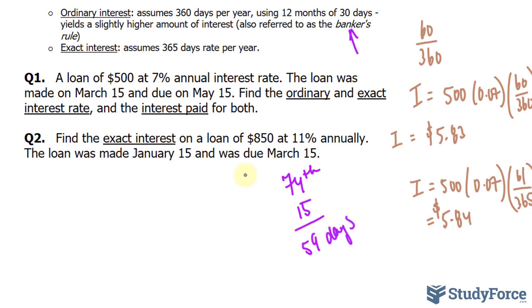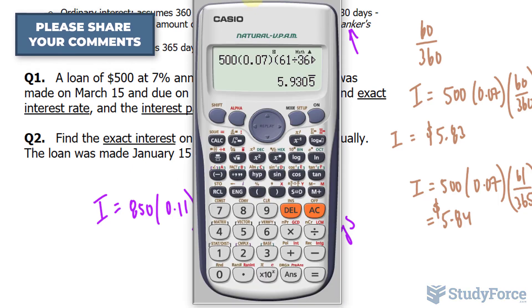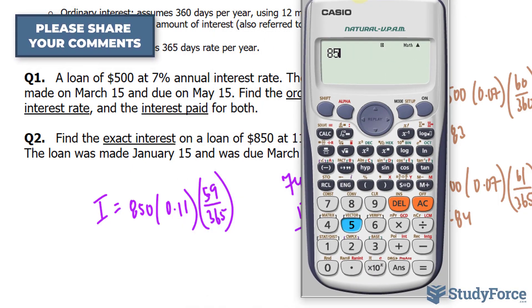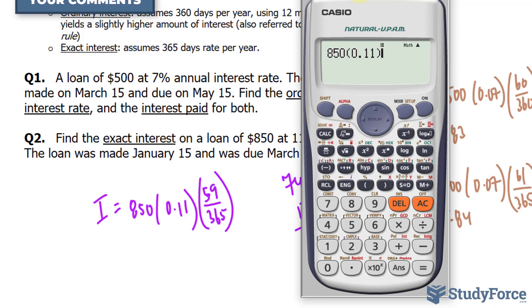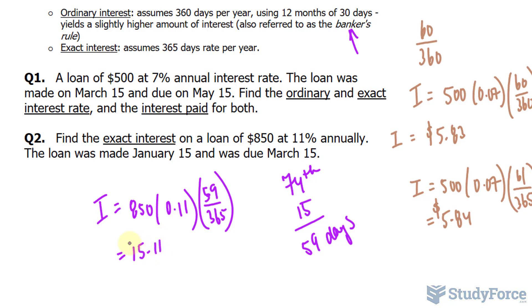To find the exact interest, we use the formula: i equals 850 times 0.11, and since we're finding exact interest, we use 59 over 365. Using our calculator, 850 times 0.11 times (59 over 365) gives us a total of $15.11.